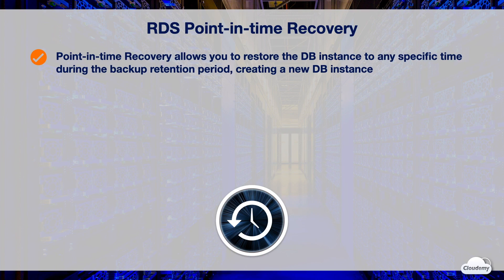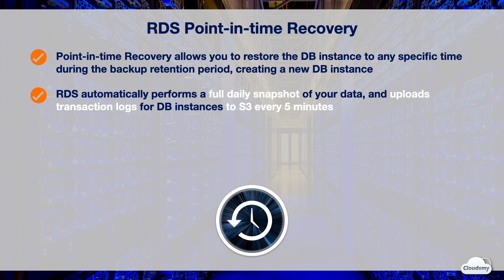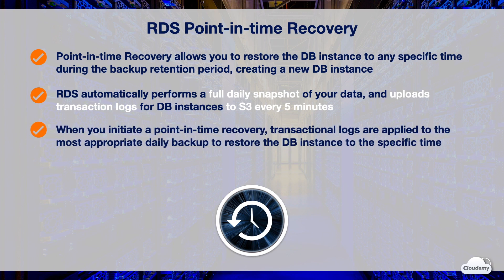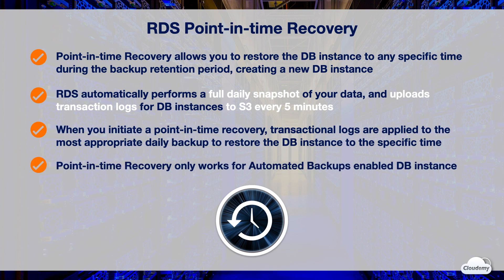Point-in-time recovery allows you to restore the DB instance to any specific time during the backup retention period, creating a new DB instance. When automated backups are turned on, RDS automatically performs a full daily snapshot of your data during your preferred backup window. It also captures transaction logs, including updates made to the DB instance, and saves them in S3 every 5 minutes. Transaction logs are important for point-in-time recovery. When you initiate a point-in-time recovery, transactional logs are applied to the most appropriate daily backup to restore your DB instance to the specific time. Point-in-time recovery only works for automated backups-enabled DB instances.